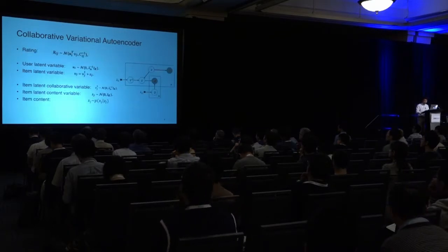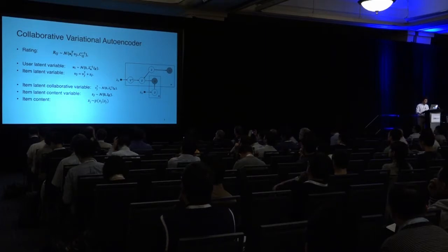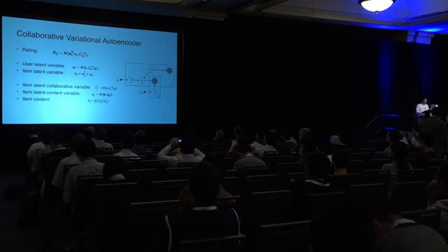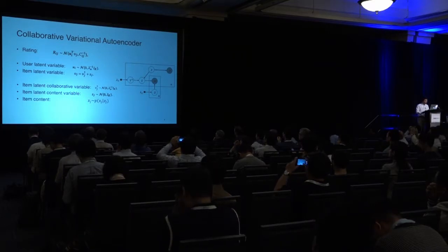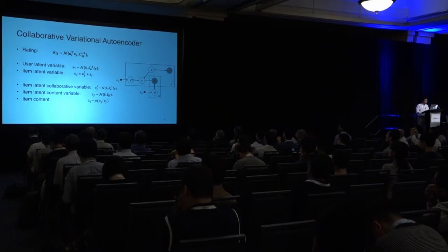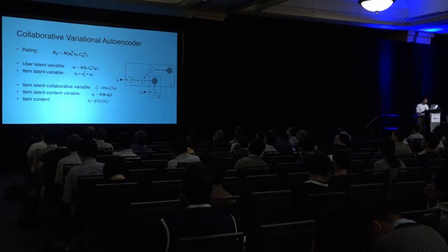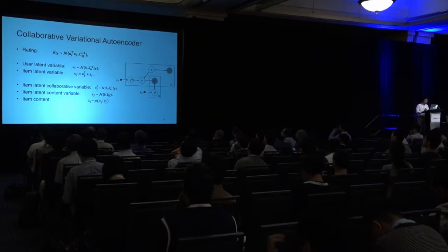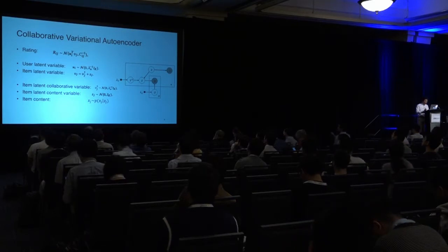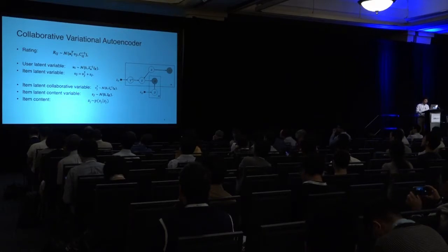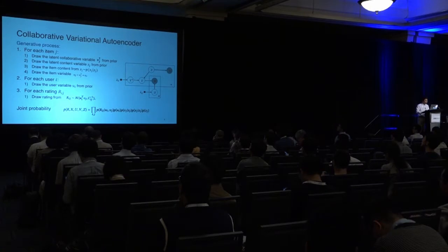Let me decompose the model. On the right is a simplified figure where the shaded nodes X and R are observed and the rest are latent. The rating R follows a normal distribution with mean being a dot product of user variable U and item variable V. The user variable follows a normal distribution, and the item variable V is composed of both a collaborative variable V† which encodes collaborative information, and the content variable Z which encodes content information. The content X is drawn from a conditional probability distribution.